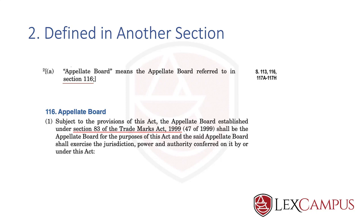Section 116(1) states that the appellate board is established under section 83 of the Trademarks Act, 1999. The appellate board is not defined within the Patents Act — it is actually defined in the Trademarks Act, 1999, because it is a common appellate board for trademarks, copyright, patents, designs, and geographical indications. Its patent function started operating only after the Novartis case, when a bench was specially constituted to hear it, as it was the first appeal from the patent office to the appellate board.